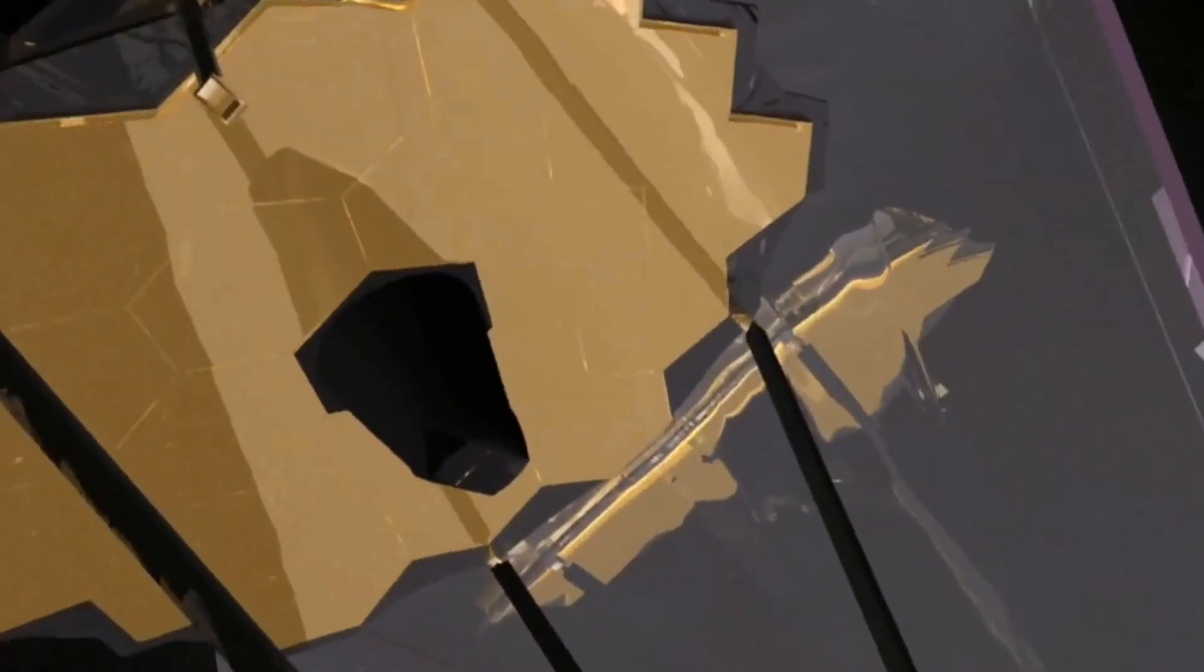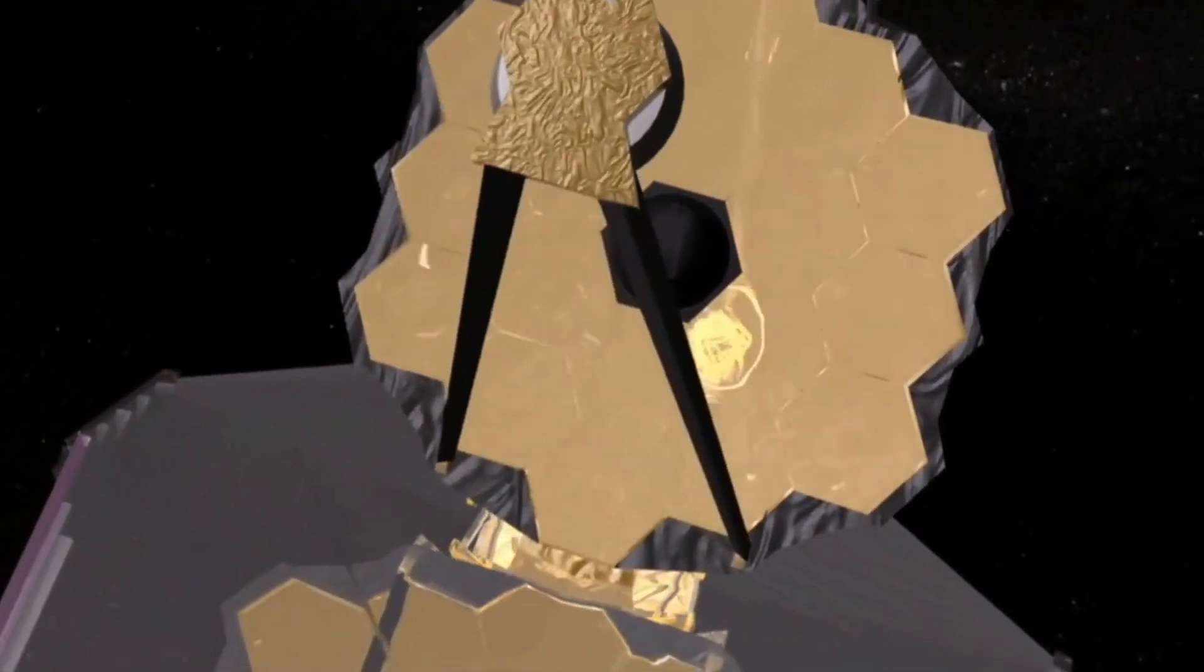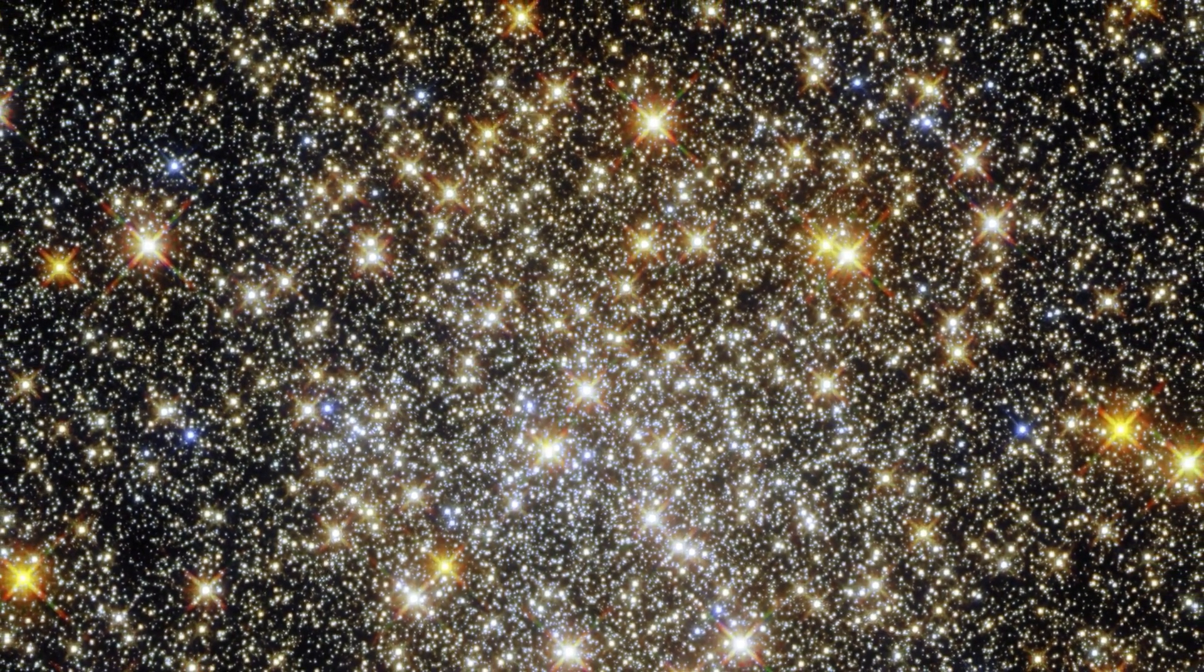Scientists are interested in using James Webb Space Telescope data to study the diffuse light in smaller groupings of galaxies, since these groups may eventually merge to form the clusters we observe now.